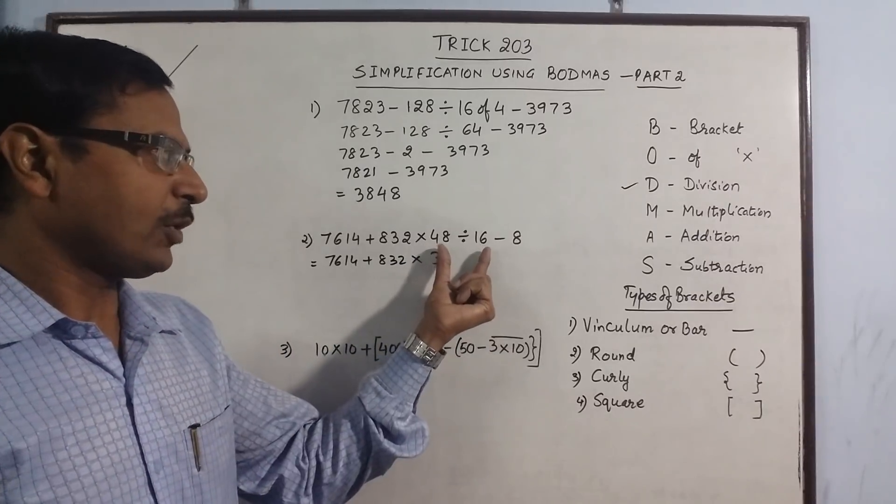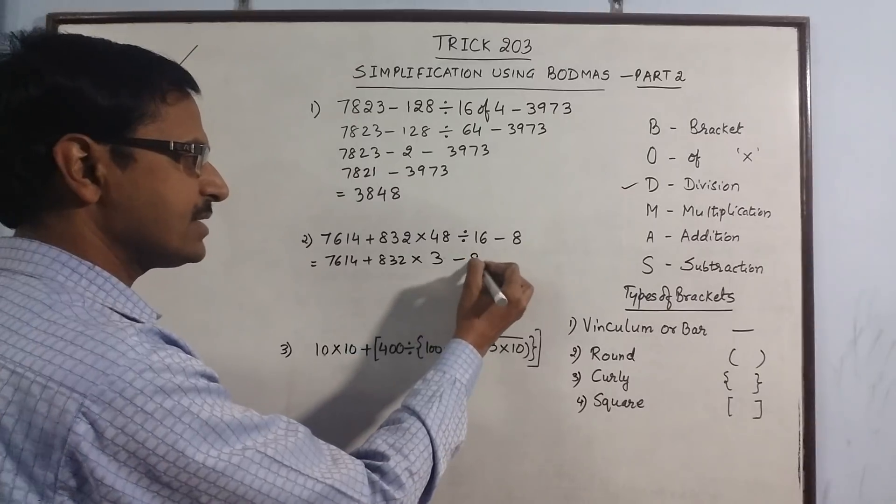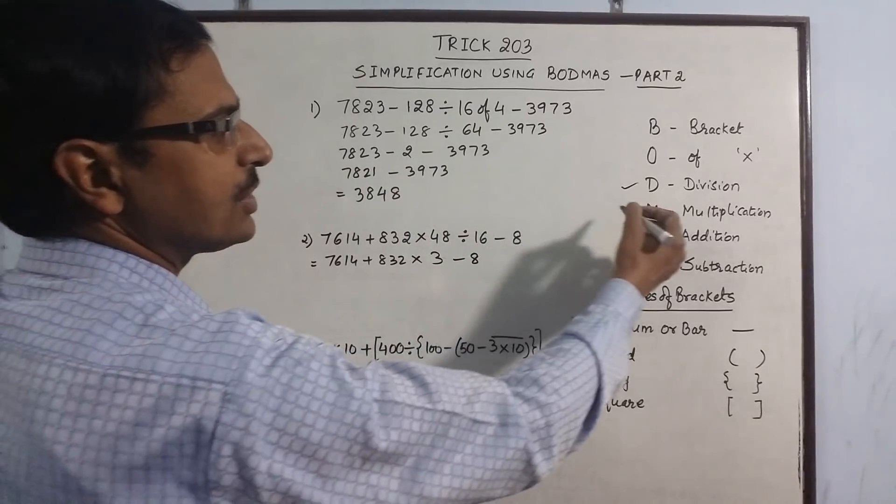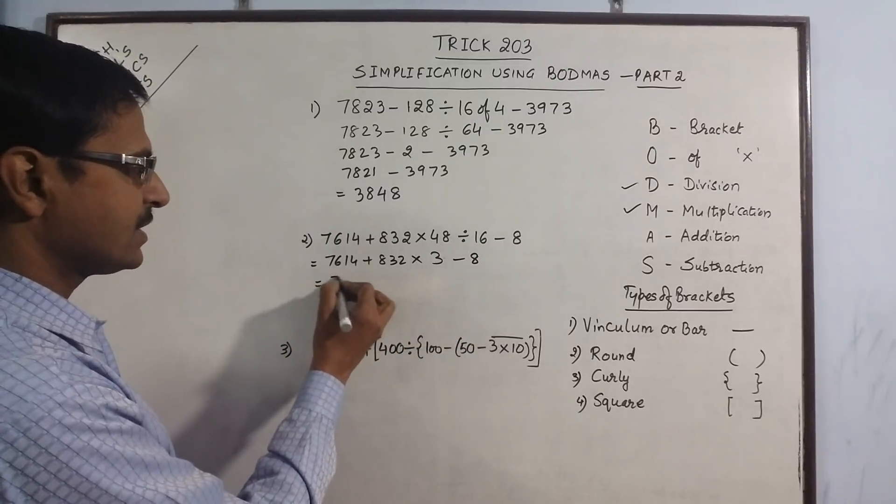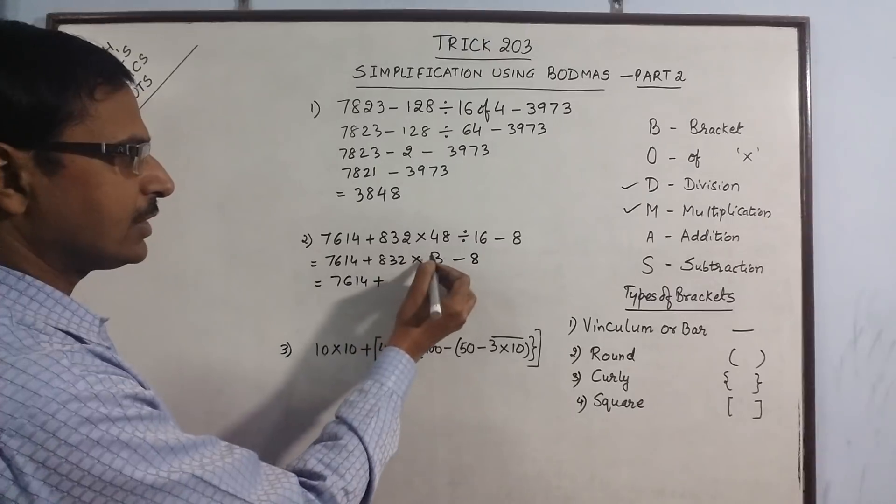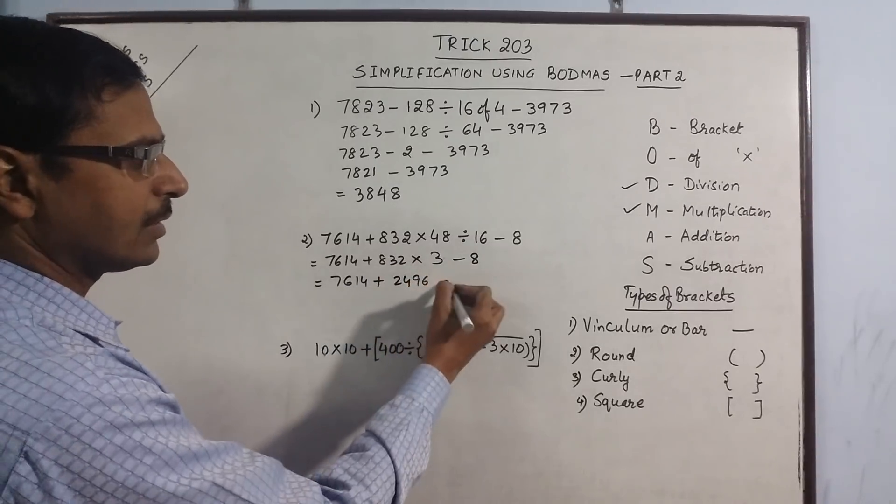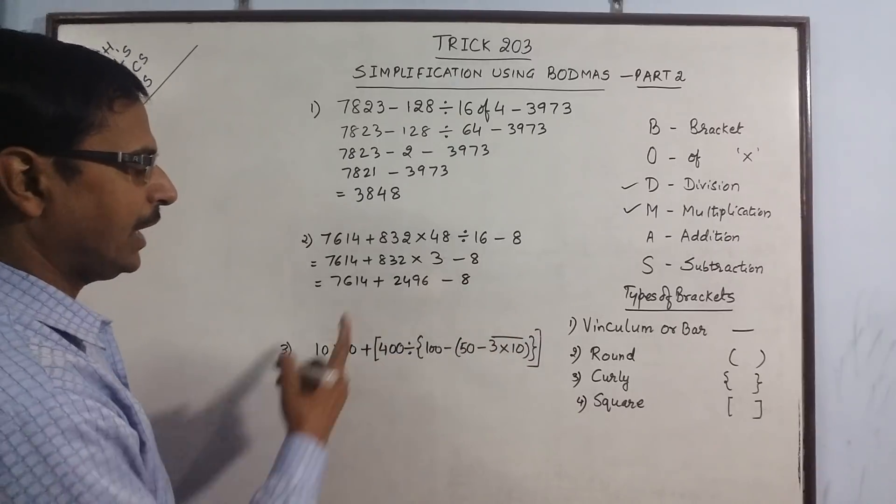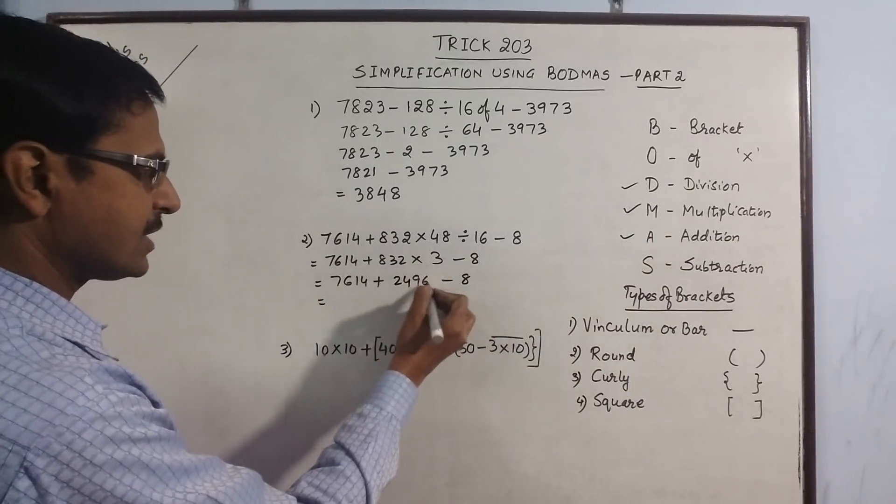So I have performed this division, minus 8 remains as it is. After division you have multiplication, so just multiply these two terms: 7614 plus, so 800 into 3 is 2400, and 32 into 3 is 96, minus 8.